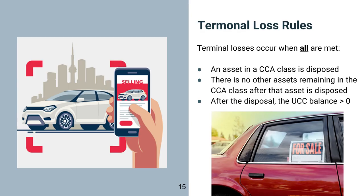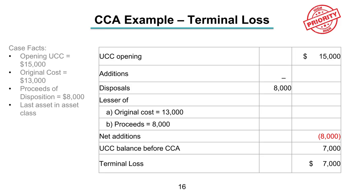Now let's talk about terminal losses. To have a terminal loss, all of the following must be met: an asset in a CCA class is disposed of, there is no other asset remaining in the CCA class after the disposal, and the UCC balance after disposal is greater than zero. In our example, the opening UCC balance is $15,000, no additions, and an asset originally costing $13,000 was disposed of for proceeds of $8,000. Taking the lesser of the two — $8,000 — and subtracting from the opening balance gives an ending UCC balance of $7,000.